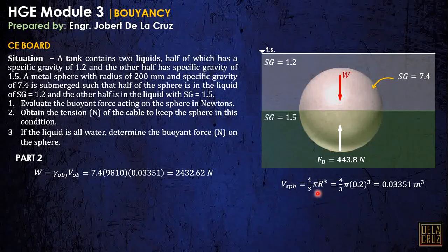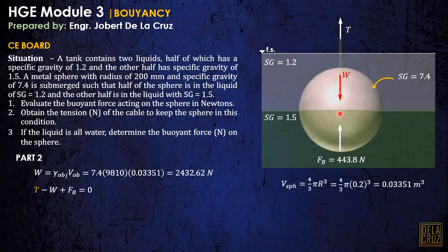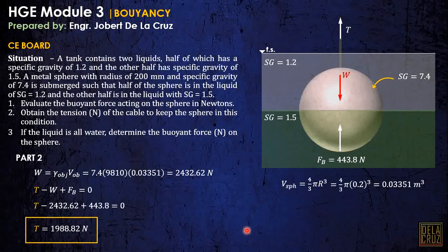To maintain the sphere in this position, we need to add a supporting tension from above. By equating the forces for equilibrium: tension minus weight plus buoyant force equals zero. With the weight and buoyant force already calculated, we can solve for the tension needed to maintain this equilibrium position.